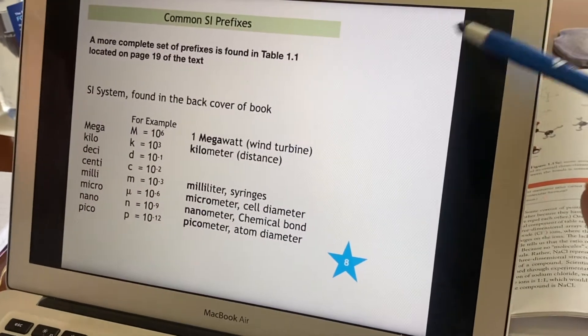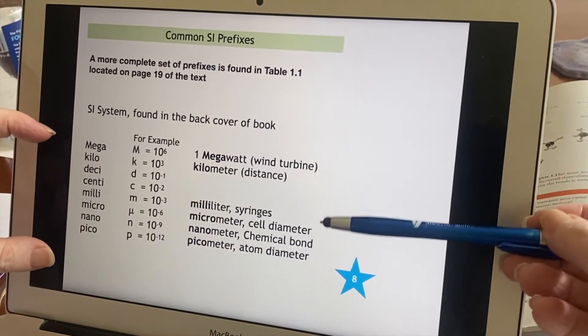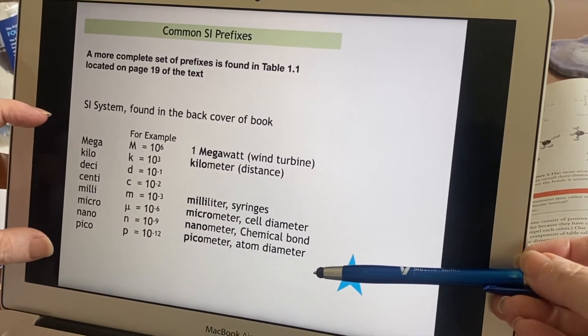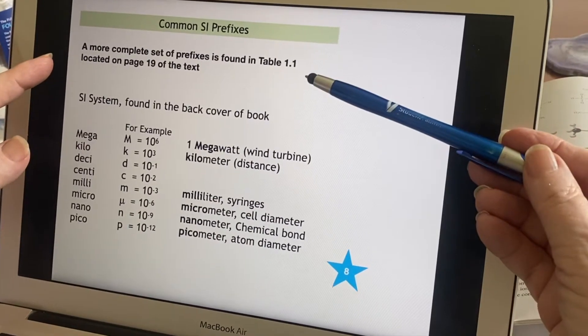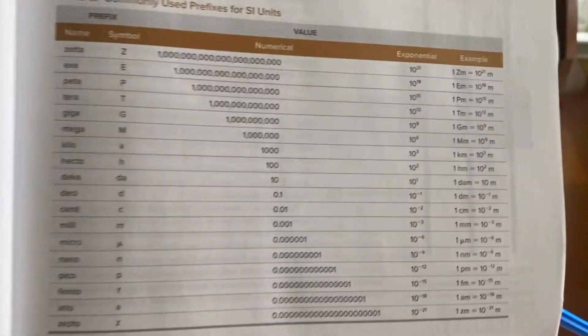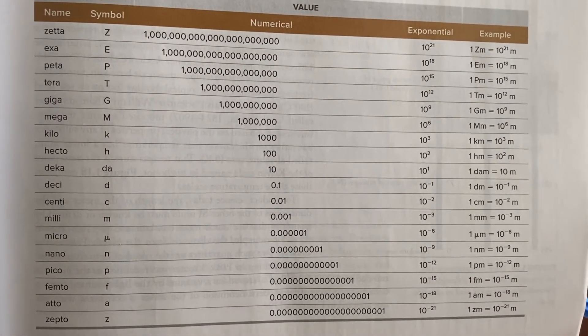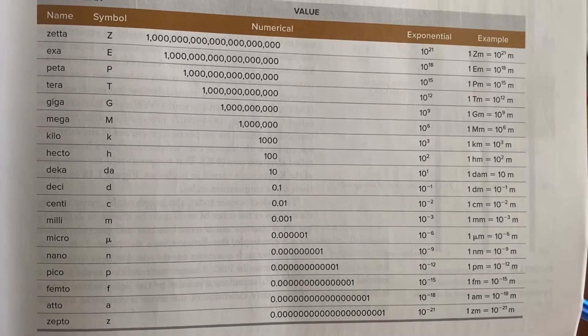All right, so we have here what is essentially the ones that you're most likely to use in chemistry. We have a more complete set in the table in the book. This guy even includes the really big ones Zeta and the really small one Zepto.